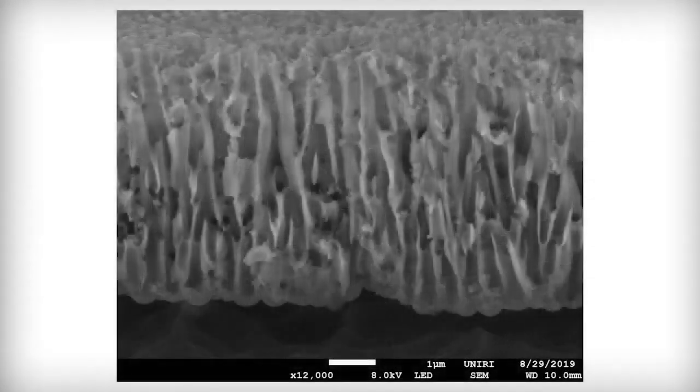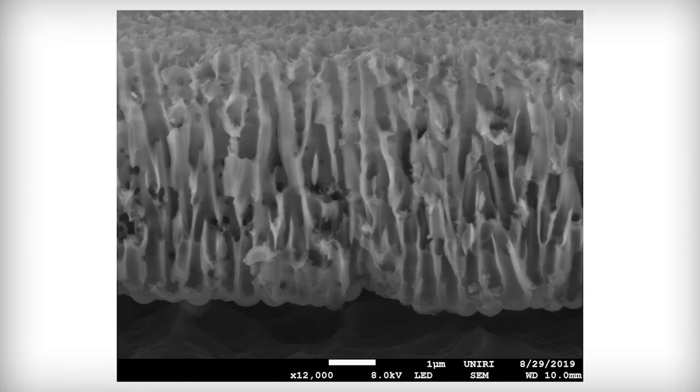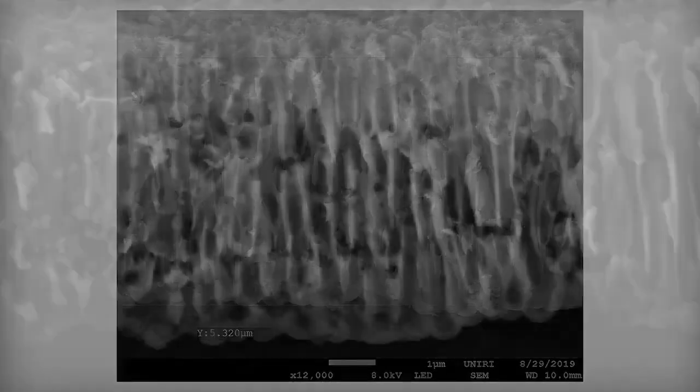The sample was cooled with liquid nitrogen so that it could break and show a cross-section. The figure shows the cross-section of the obtained porous oxide layer with a thickness of about 5 micrometers. Cross-sectional analysis of the sample synthesized in a 100 millimole phosphoric acid solution was performed with a low secondary ion detector at a voltage of 8 kilovolts and an operating distance of 10 millimeters at a magnification of 12,000 times.